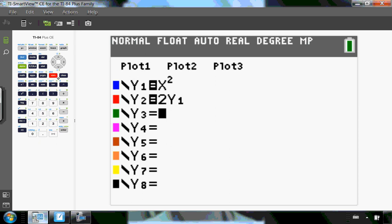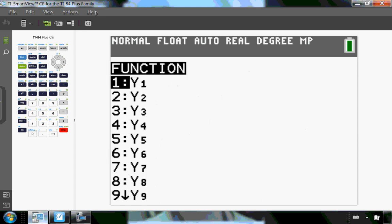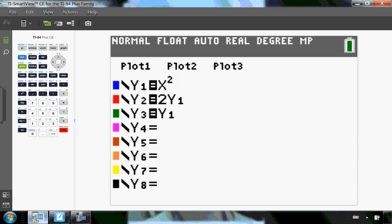A different way of doing it is hitting your vars button, going over to y vars, enter for function, enter for y1. That's going to be f of 2x. Then I just keep going down.